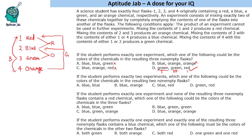The next question: if the student performs exactly 2 experiments - meaning he mixes 2 pairs - which one of the following could be the colors of the chemicals in the resulting 2 non-empty flasks? Since the product of an experiment cannot be reused, he has to mix 2 separate pairs, and will end up with 2 resulting chemicals.